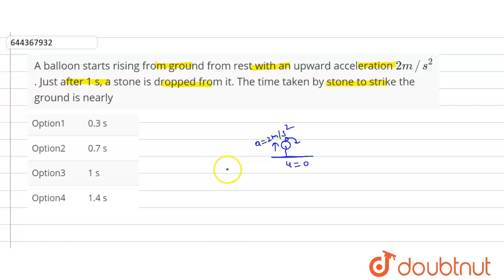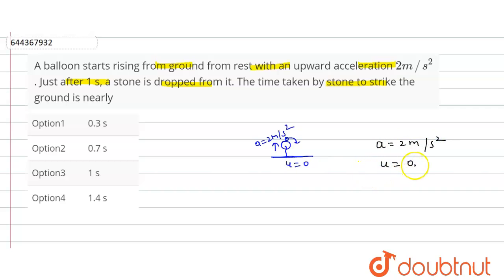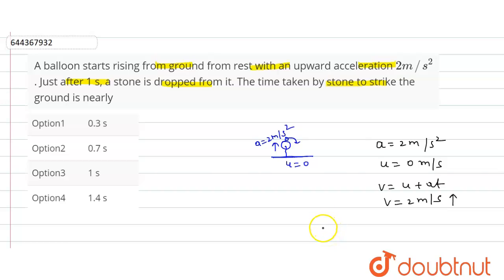When a stone is dropped from the balloon, its initial velocity is the same as the velocity of the balloon at that instant. The upward acceleration a is equal to 2 meters per second squared. The balloon starts from rest, so u equals zero. The balloon rises for one second before the stone is dropped. Hence v = u + at, so v equals 2 meters per second in the vertically upward direction. This is the initial velocity of the stone.